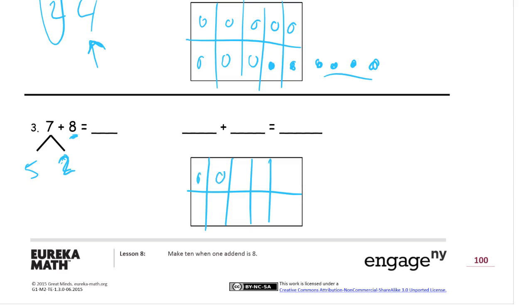In my 10 frame, I've got 10 spots. So here's my 8: 1, 2, 3, 4, 5, 6, 7, 8. And the 7 is going to be 1, 2, 3, 4, 5, 6, 7. So that's 10 in the 10 frame, and 5 outside of the 10 frame. 10, 5 is 15.